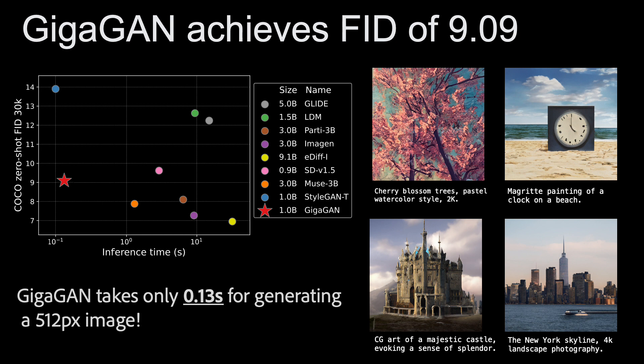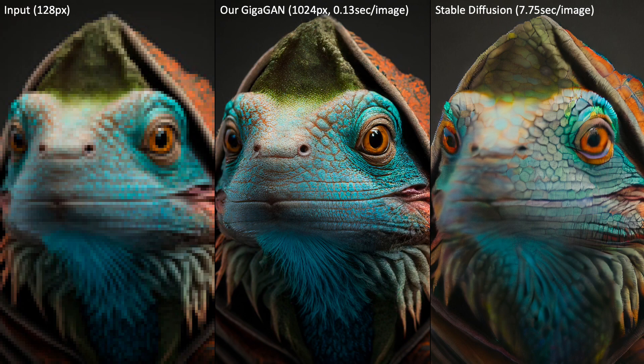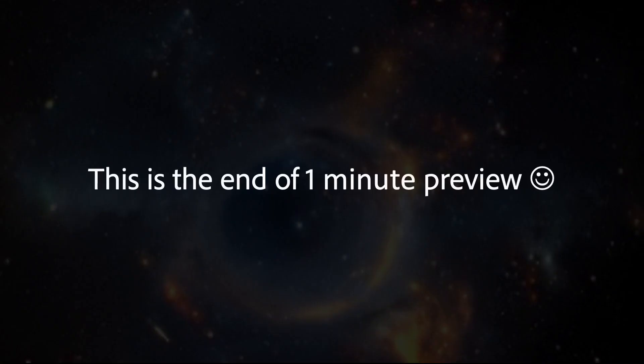GigaGAN generates a 512 pixel image in just 0.13 seconds. Particularly, GigaGAN shows high resolution image sampling at an unprecedentedly fast speed. For instance, GigaGAN requires only 0.13 seconds for 1K sampling. This concludes the 1-minute summary.